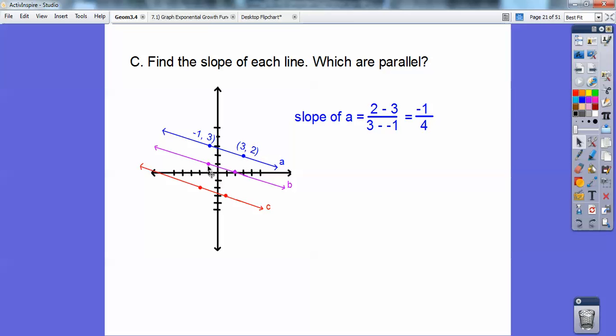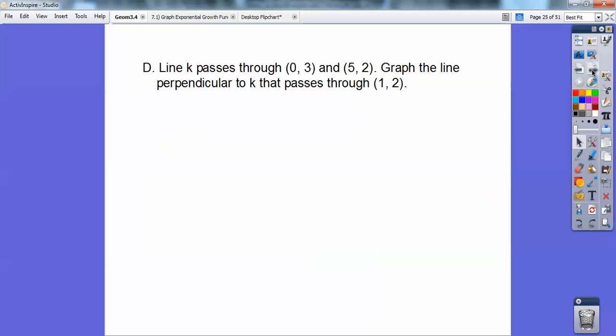I'm going to do that with this one. This purple one goes down 1 to the right 3, so the slope of line B is negative 1 third. Same with C. I'm going to go down 1 to the right 3, so the slope of line C is also negative 1 third. And since B and C have equal slopes, then those lines are parallel to each other. A is not parallel to those ones because it has a different slope.